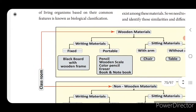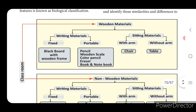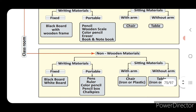You can see the things in the classroom and how they are classified. The things in the classroom are classified into wooden materials and non-wooden materials. Wooden materials are further divided into writing materials and sitting materials. Writing materials can be fixed — like a blackboard with a wooden frame — or portable, like pencil, wooden scale, color pencil, or notebook. Sitting materials are with arm, meaning chair, or without arm, meaning table.